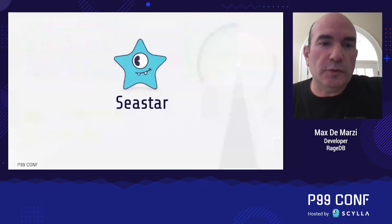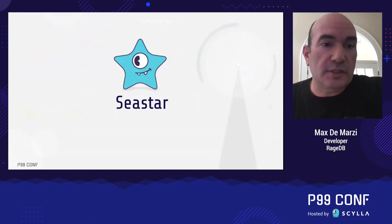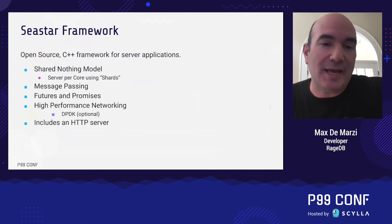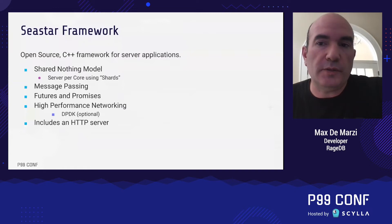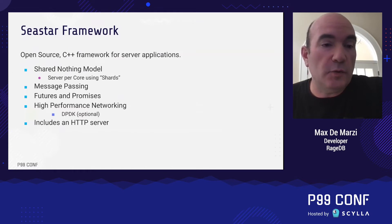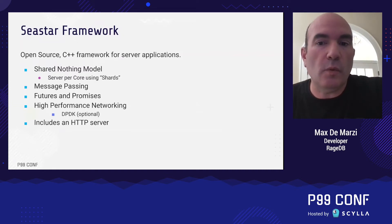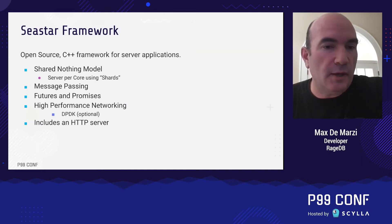In this multi-core future, we are going to have to deal with it, and this is where the Seastar framework comes in. Seastar is an open source C++ framework designed for building server applications using a shared-nothing model that puts all requests on individual cores — imagine each core as a separate server. It shares information between CPU cores by passing messages using futures and promises that don't allocate memory and support continuation. It also provides high-performance networking including DPDK, and comes with an HTTP server.